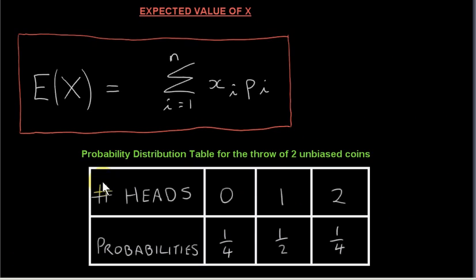Let's look at another example. Here is the probability distribution table for the throw of two unbiased coins. We looked at this distribution in a previous video. We saw that the probability of getting 0 heads for the throw of two unbiased coins is one-fourth. The probability of getting 1 head is one-half. The probability of getting 2 heads is one-fourth. Of course, these probabilities sum to 1.